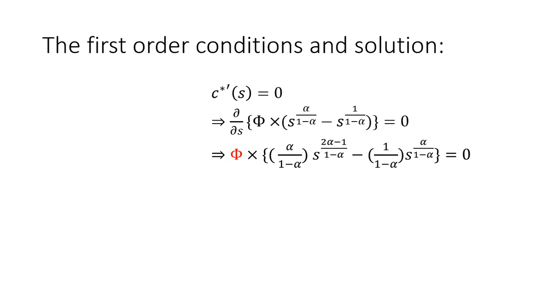And then the next thing we can do is actually divide through by this constant on both sides. The right-hand side is 0. Let's divide through by phi. And the other thing we can do is actually multiply through by 1 minus alpha to get rid of those denominators. That also cleans things up a little bit here. And then let's just add the negative term over to the right.